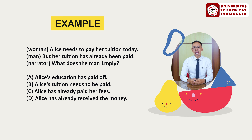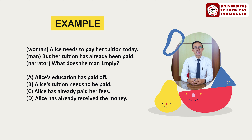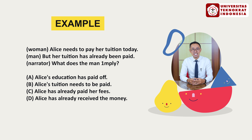In your answer choices you read: A — Alice's education has paid off; B — Alice's tuition needs to be paid; C — Alice has already paid her fees.